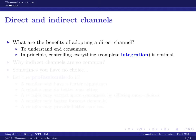We know decentralization typically creates inefficiency. In the topic of channel coordination, the best thing we want to do is first find some ways to make the system behave like integration — make the pie as large as possible — and then split profits among different players. Integration means system-optimal. It will never be possible for a decentralized system to be better than an integrated system, assuming all players perform equally well.